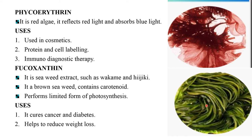Phycoxanthin is produced from seaweed extracts such as wakame and hijiki. It is a brown pigment produced from brown seaweed containing carotenoids, which perform limited forms of photosynthesis. It is used to help cure cancer and diabetes.